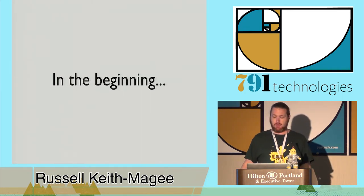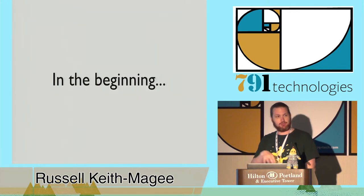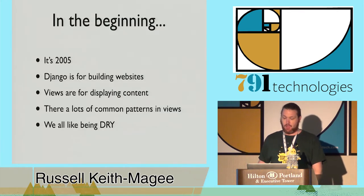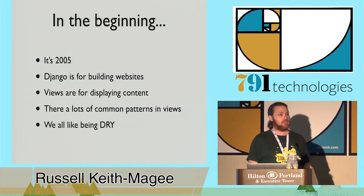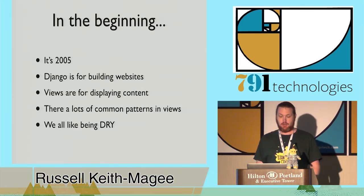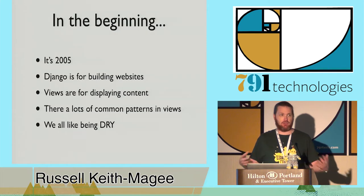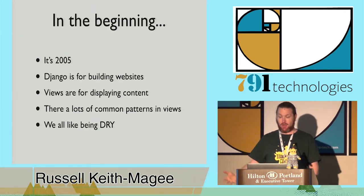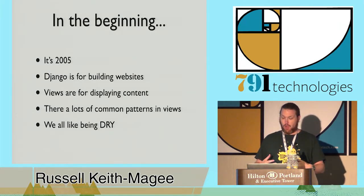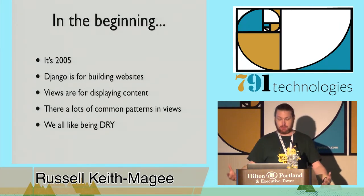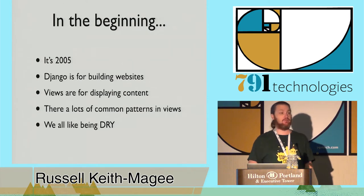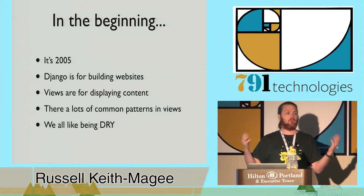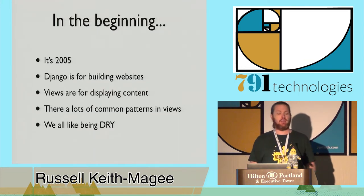To explain why we've got what we've got, it helps to know where we've come from. People who ignore history are doomed to repeat it. Cast your mind back to the halcyon days of 2005. Django was introduced as a mechanism for building websites. Views are there for displaying content. There are lots of common patterns in views and we all like being DRY. So Django had this concept of generic views, added on July 25th, 2005 - release 304 - about two weeks after Django went public.